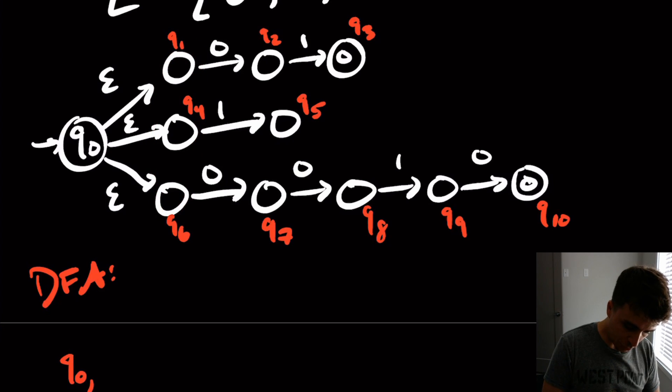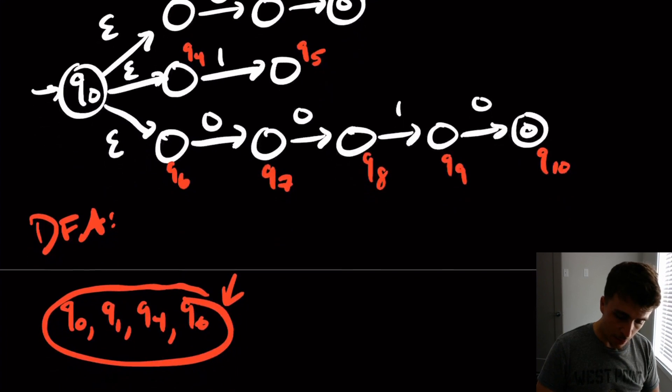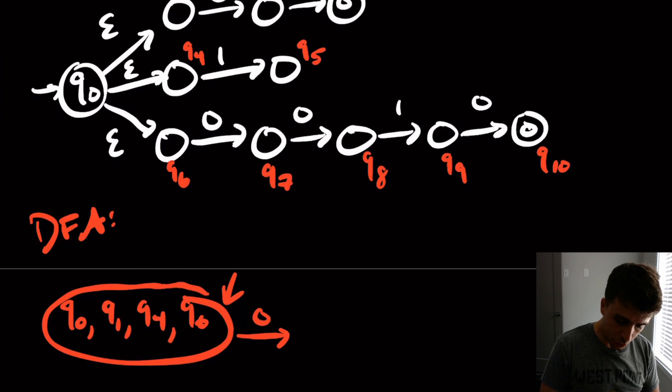So I'm going to have a state q0, q1, q4, q6. And then, so now we got to figure out where it goes on 0 and 1.